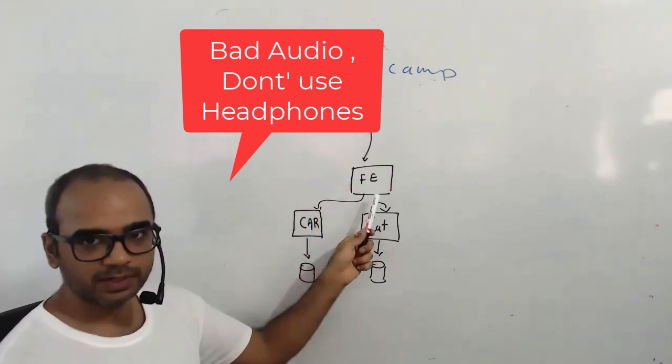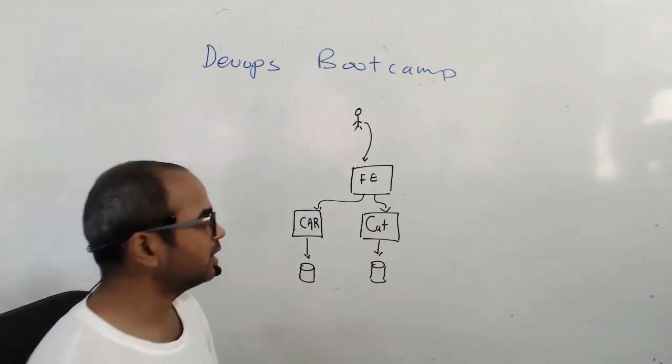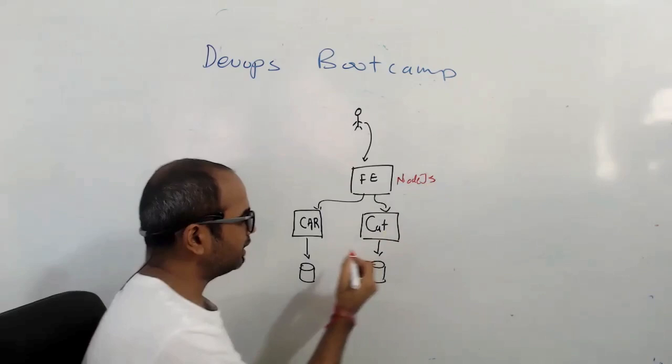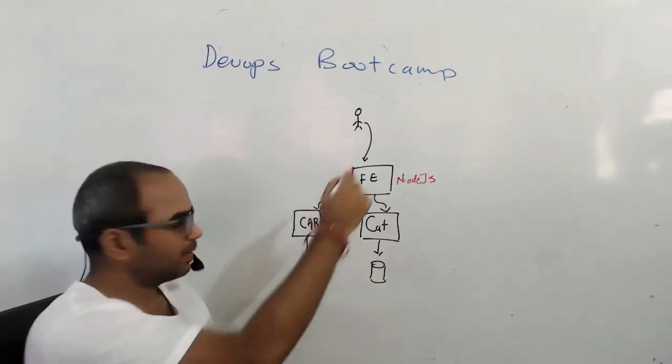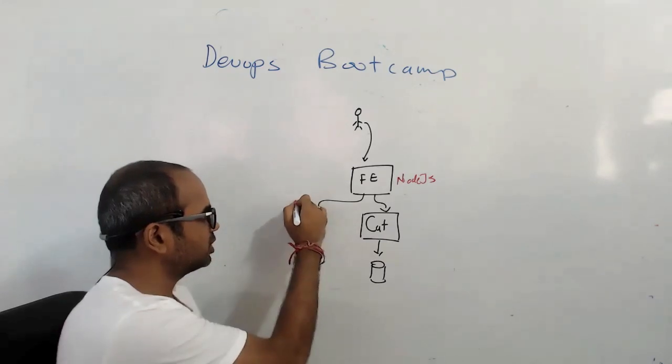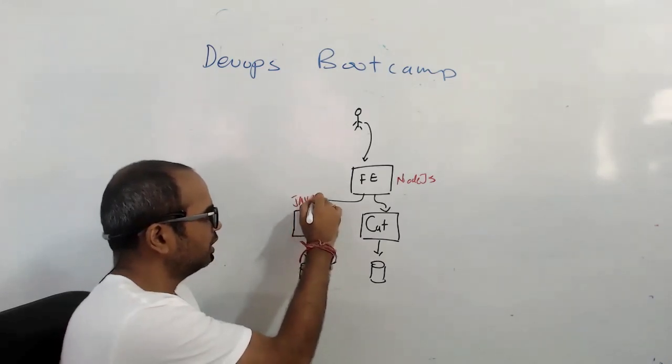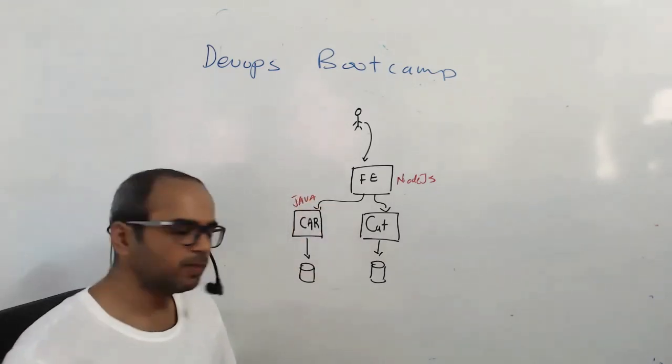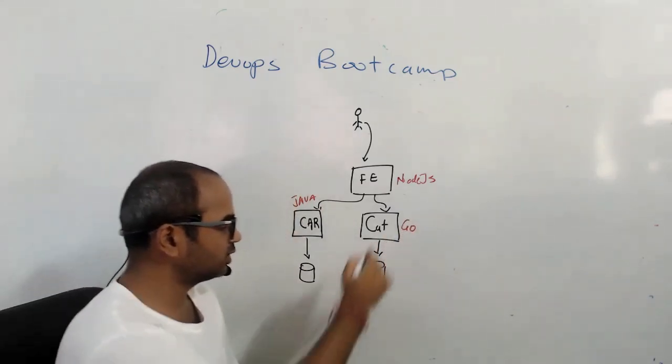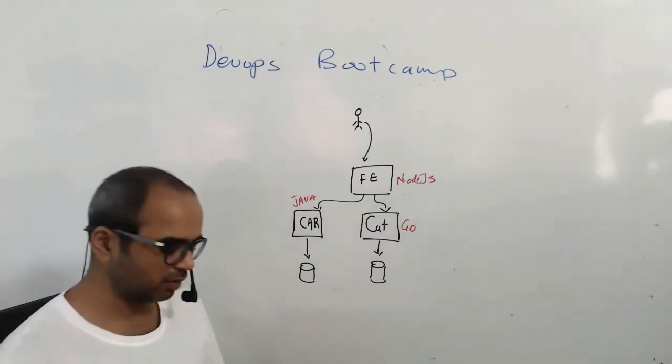With the front end, the front end is a Node.js application. And then you have a couple of applications right here. There's a cards application. This cards application is a Java application that uses Maven as the build tool. And the catalog is a Golang application. So there are three different applications with three different technologies.